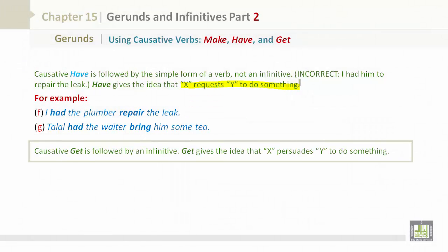Causative get is followed by an infinitive. Get gives the idea that X persuades Y to do something.